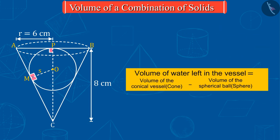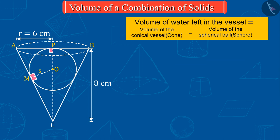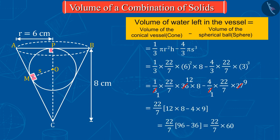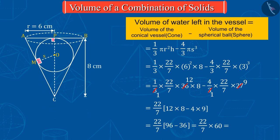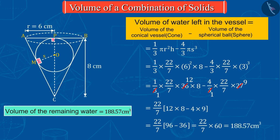So, let's find the volume of cone and sphere and solve it further to get the volume of the remaining water, which is equal to 188.57 cubic centimeters.